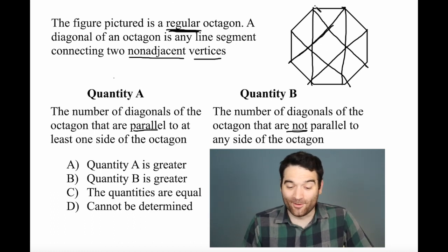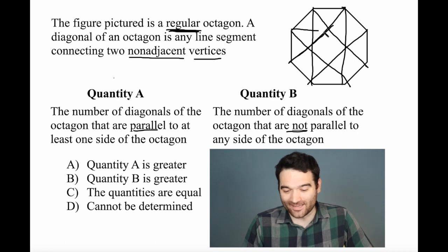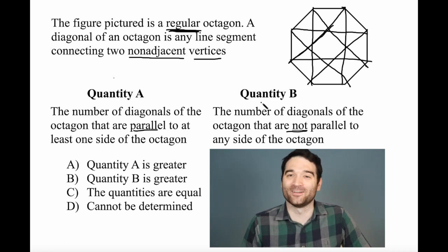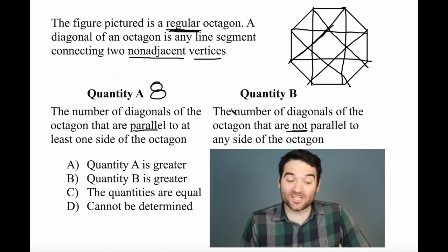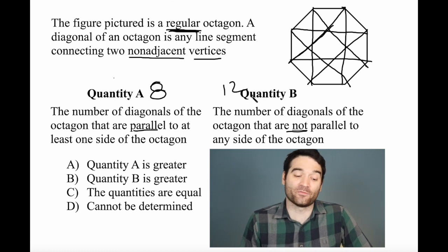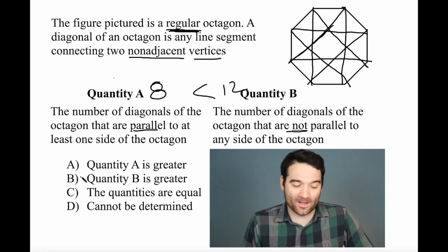And if I count them up, I have one, two, three, four, five, six. Oh, I did forget it. Seven, eight. There we go. So there are eight diagonals that are parallel. And by process of elimination, if there are 20 overall diagonals, that means 12 of them must not be parallel. So quantity B is greater.